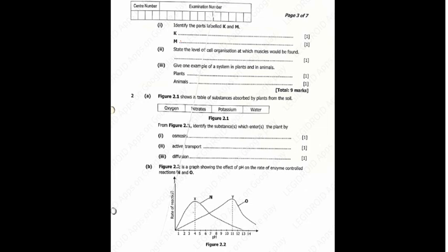Question 1b1 says identify the parts labeled K and M. We've already labeled these: part K is cells, and M is an organ. Question 1b2 says state the level of cell organization at which muscles would be found. It's important to know examples found at each level. A smooth muscle is an example of a tissue, so the answer is tissue.